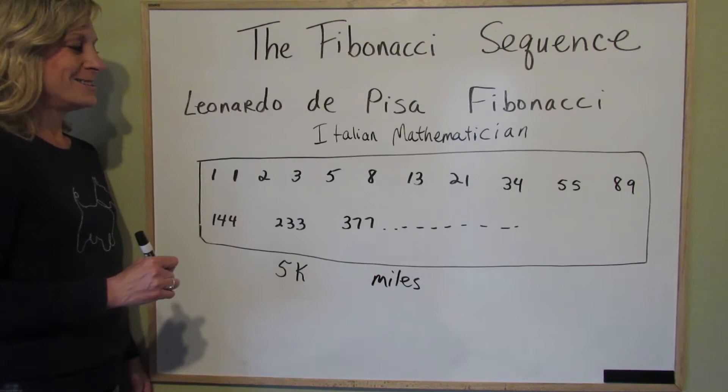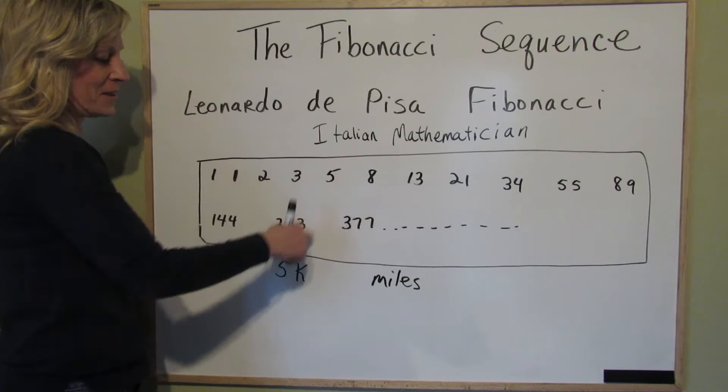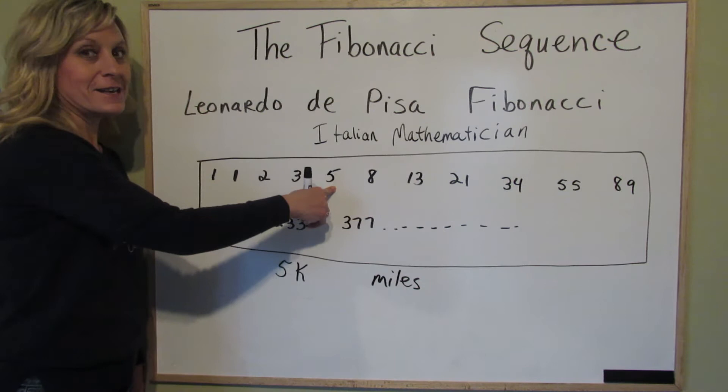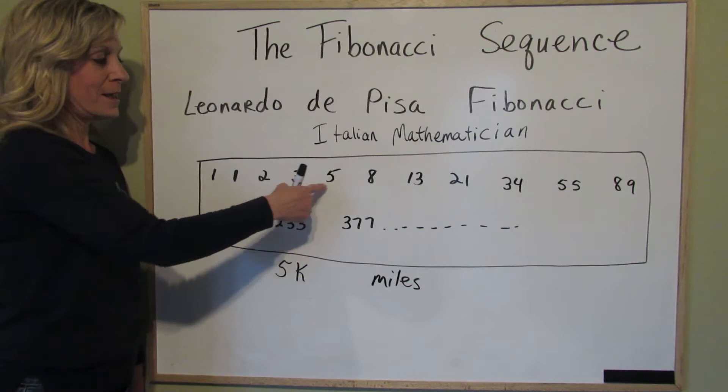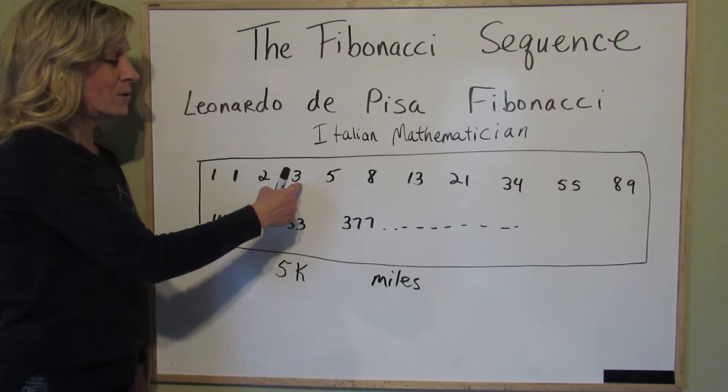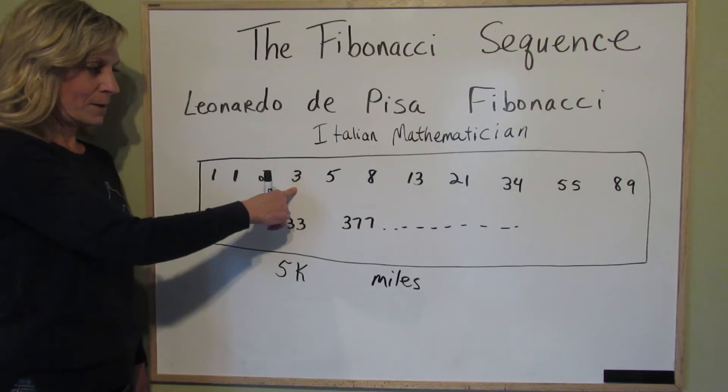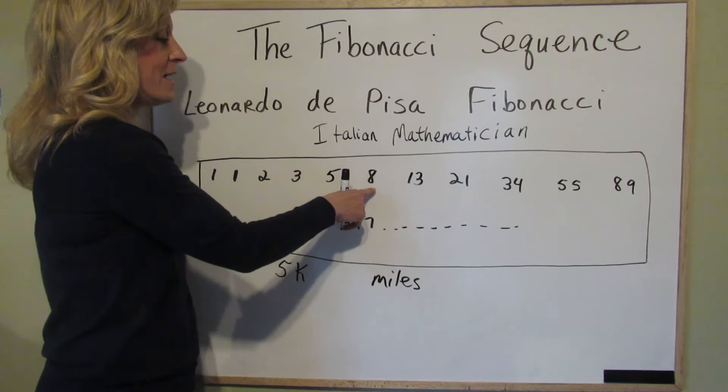What you do is look at any number in the sequence. Let's just pick the 5k. If you've run a 5k before, you know a 5k is 3.1 miles. The number before it in the Fibonacci sequence is approximately how many miles that distance is — it's not exact, but it's close and it holds true every single time. So a 5k is about 3 miles. An 8k is about 4.9 miles, so almost 5 miles.